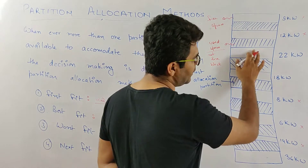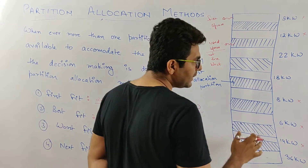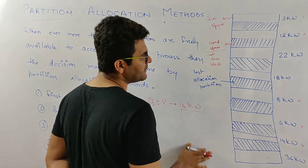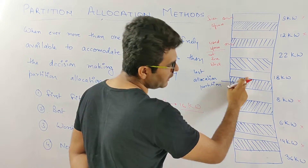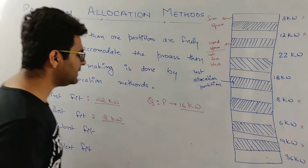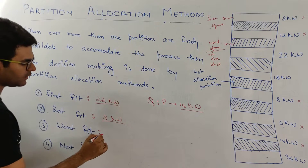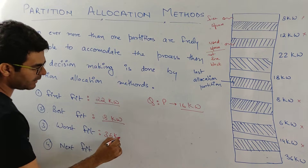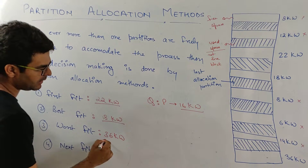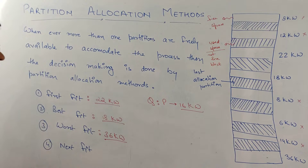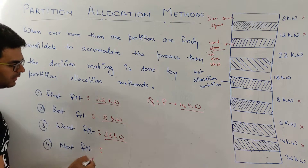For worst fit technique, the answer is the 36k word block, as worst fit selects the largest available free partition.